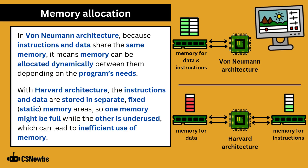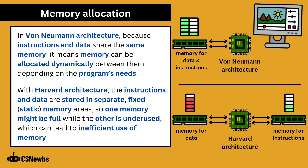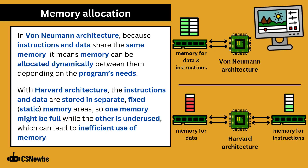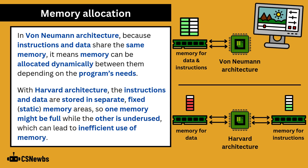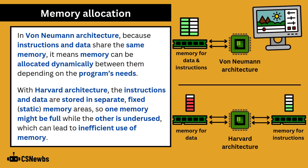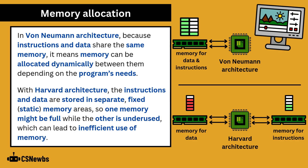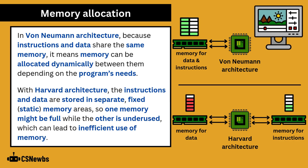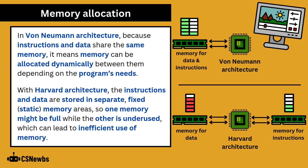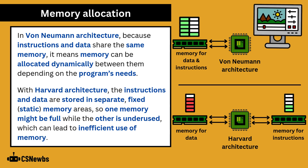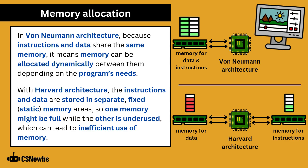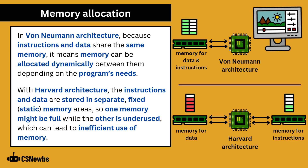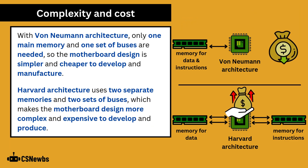For example, a video editor will use few instructions but a lot of data. With Harvard, the memory for data may be close to capacity and the memory for program instructions relatively empty, which is very inefficient. With von Neumann, this isn't a problem, because there is no fixed limit on data and instructions separately, just the overall size of RAM.